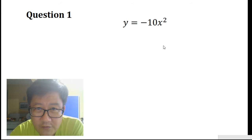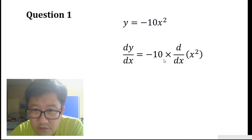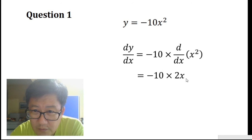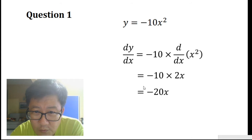y equals minus 10x squared. When we differentiate this expression, we get dy/dx equals minus 10. Minus 10 stays because that's a constant, and that is multiplied by the d/dx of x squared. When we differentiate x squared, we get 2x. So this 2x comes from the differentiation of x squared. When we multiply this, we get minus 20x. So dy/dx equals minus 20x.